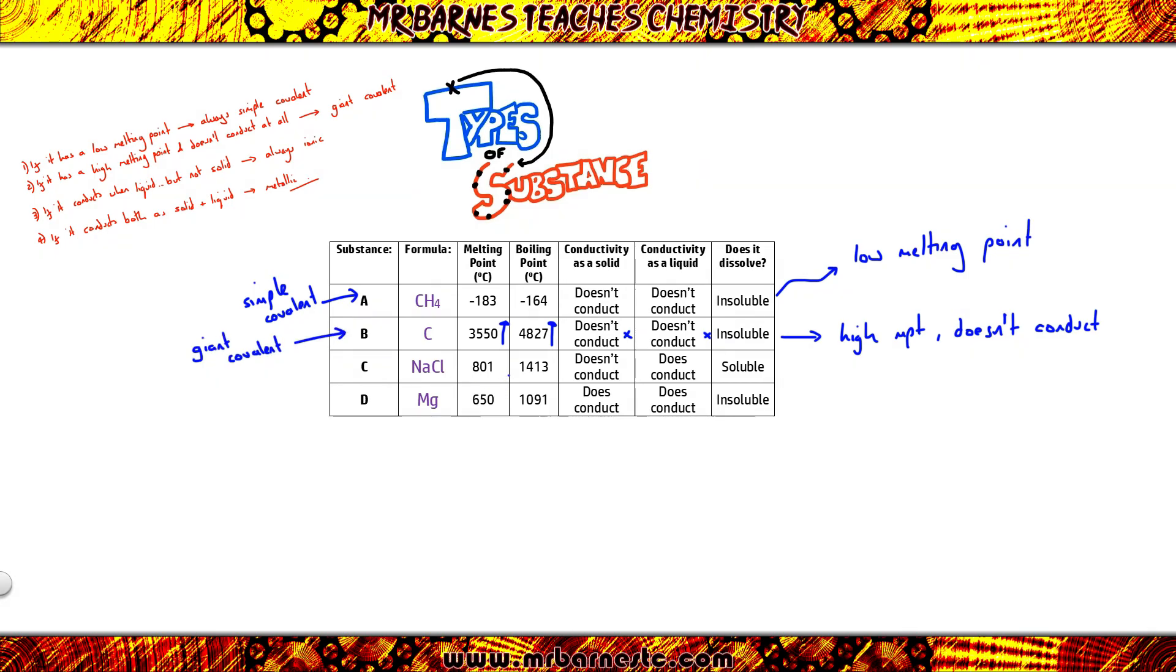Onto C, high melting point and boiling point again, so that rules out simple covalent. It doesn't conduct when solid. That rules out metallic. It does conduct when liquid. Therefore, the only thing it can be is ionic.